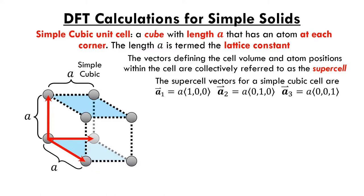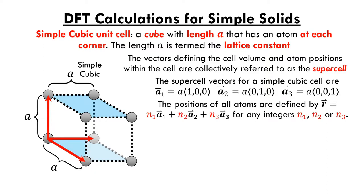For a simple cubic structure, the vectors that describe this repeating pattern have the form: A1 is equal to the lattice constant times the vector (1,0,0), A2 is equal to the lattice constant times the vector (0,1,0), and A3 is equal to the lattice constant times (0,0,1).